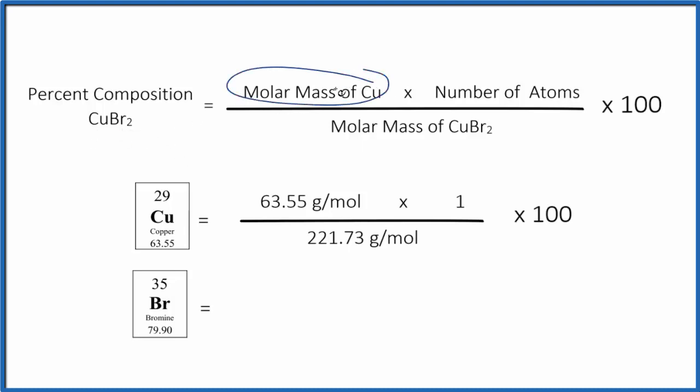The way we do it, we find the molar mass for copper. So copper right here, 63.55 grams per mole. Then we multiply that by the number of atoms. We have just the one copper atom right here. So we multiply these numbers and divide by the molar mass of CuBr2.